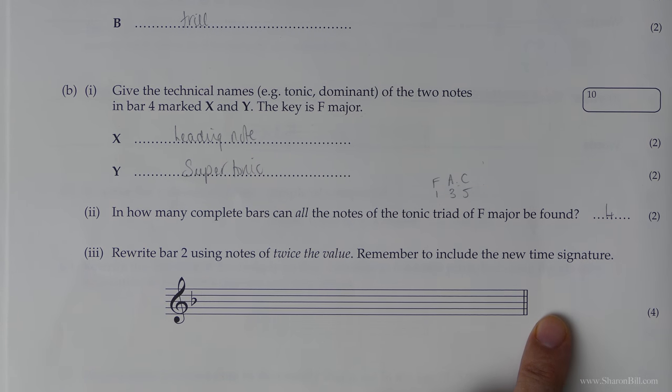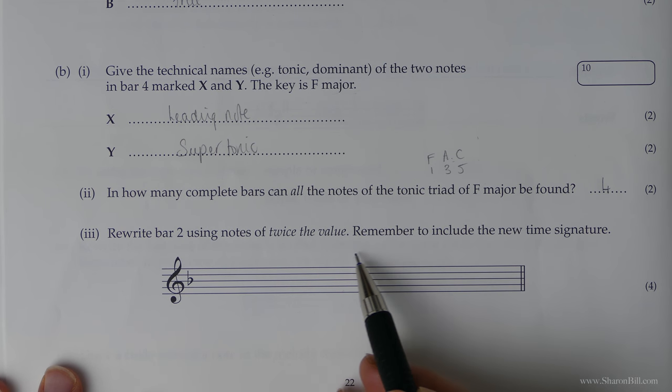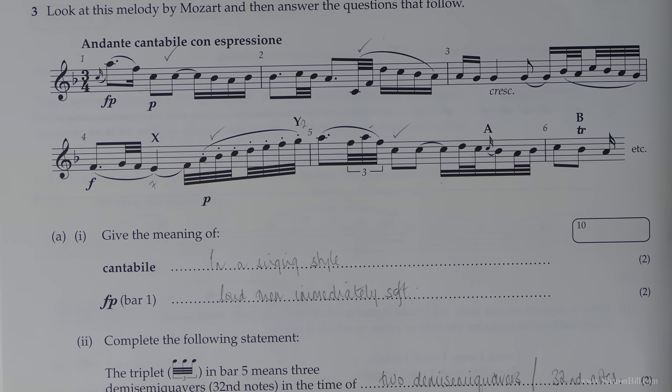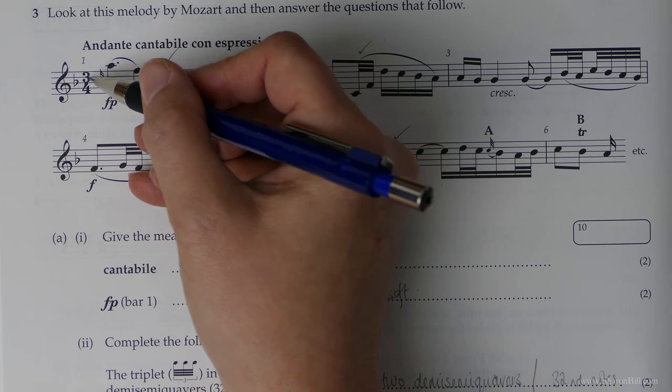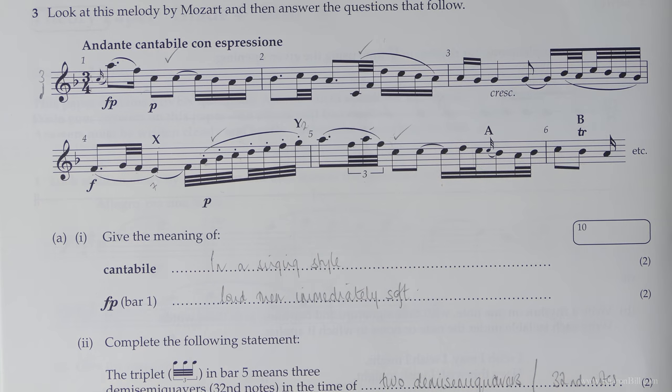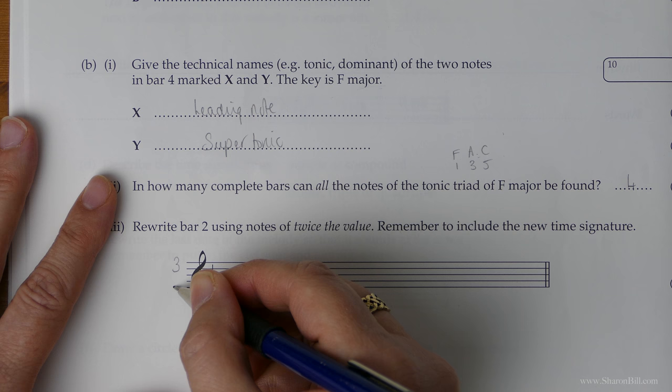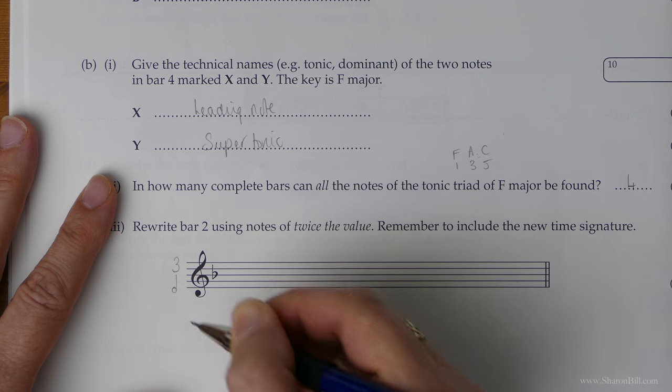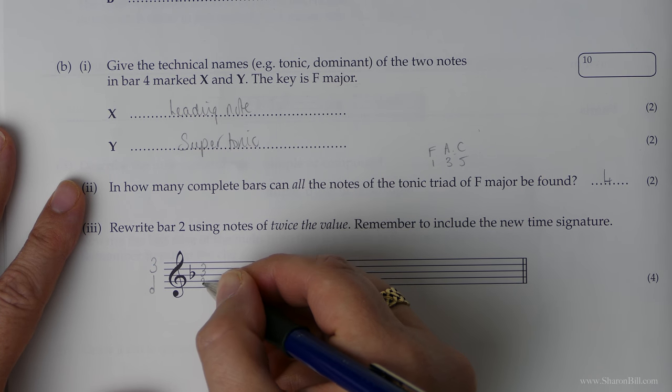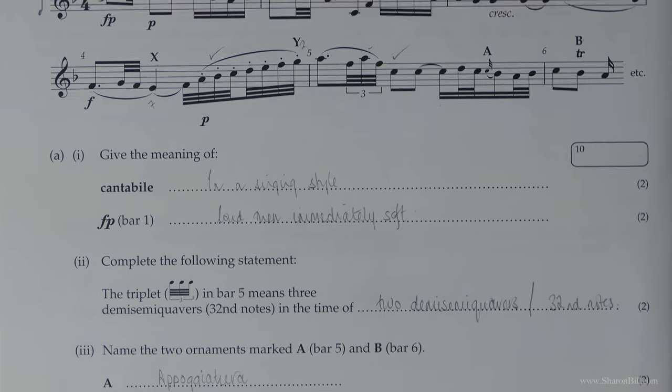And so rewrite bar two using notes of twice the value. Remember to include the new time signature. So let's look at what we've got at the moment. Let's deal with the time signature first of all. So here we are in three, four, three quarter notes or three crotchet beats. So that's what we've got at the moment. You never change the top number. So to double the value, we need three beats in a bar. But instead of quarter notes, we go to half notes or minims. So the time signature that represents that is three over two. So that's the thinking done now.